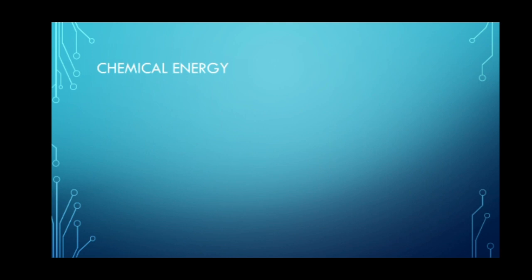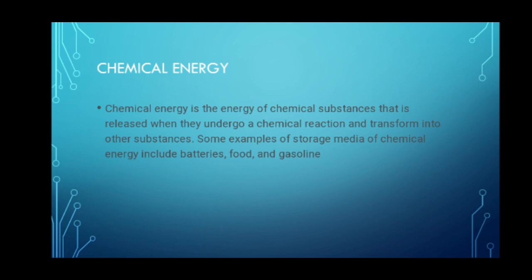Now we have chemical energy. Chemical energy is the energy of chemical substances that is released when they undergo a chemical reaction and is transformed into other substances. Some examples of storage media for chemical energy include batteries, food, and gasoline. For example, batteries convert chemical energy to light; food converts chemical to mechanical energy for us to do work; and gasoline converts chemical to mechanical energy to power a car. Other examples include coal, natural gas, wood, and petroleum.